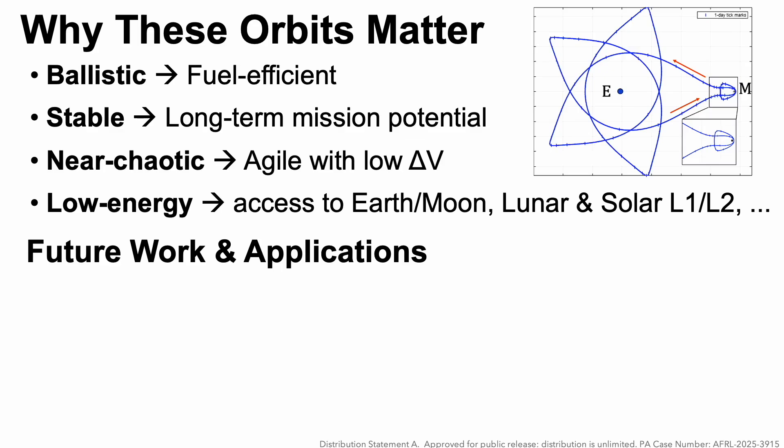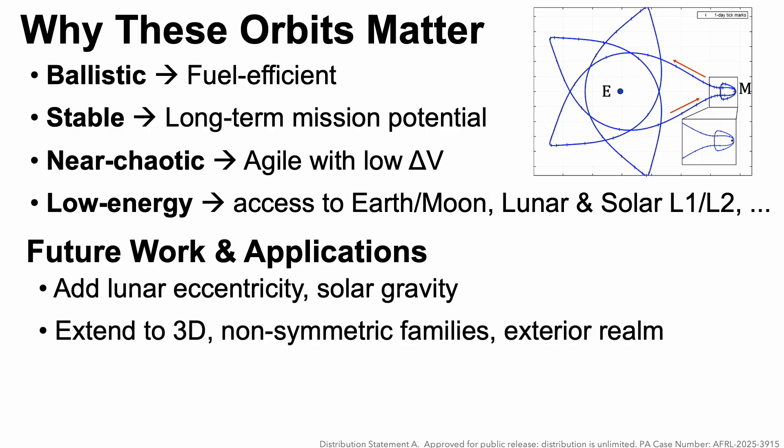What's the future work and applications? We want to add the effect of lunar eccentricity and solar gravity. My intuition is that some subset of these orbits will hold up, especially because on the Earth side, these are naturally resonant, meaning the Moon will be in the same place when the trajectory both leaves the Moon region and approaches the Moon region. We'd like to extend to 3D and to the non-symmetric families. One could also add in the exterior realm, meaning you could possibly design trajectories that are stable that go between the Earth, the Moon, and the exterior realm and then back again.